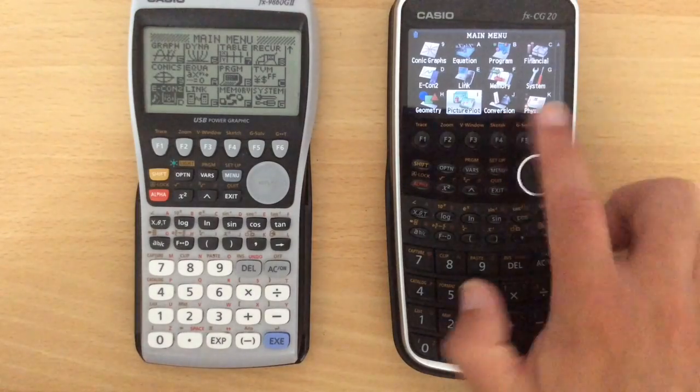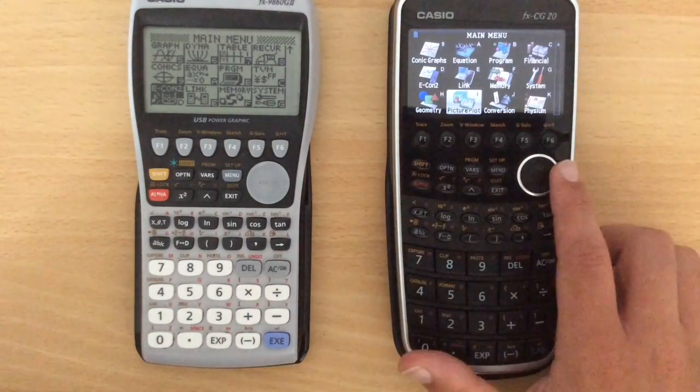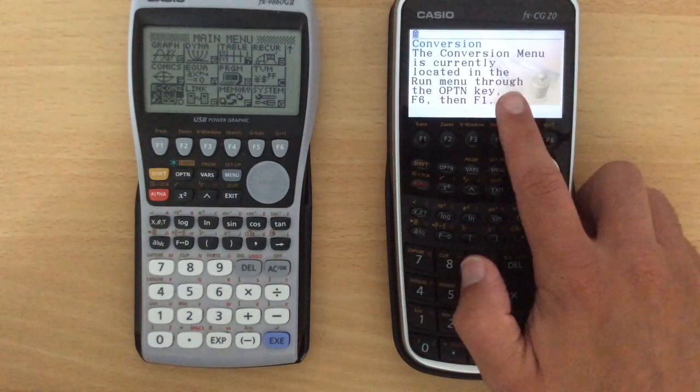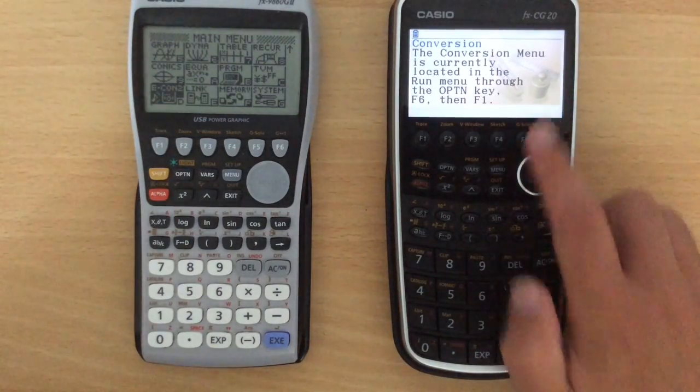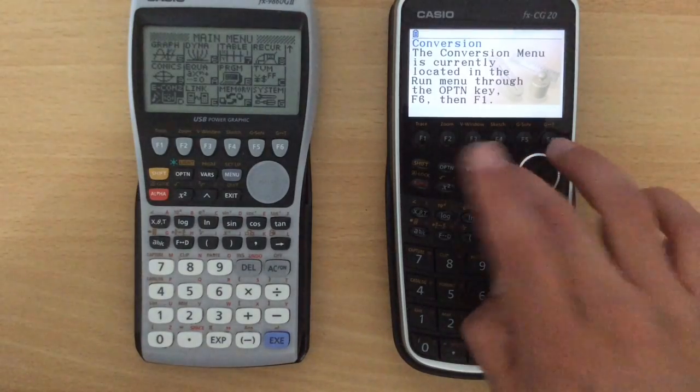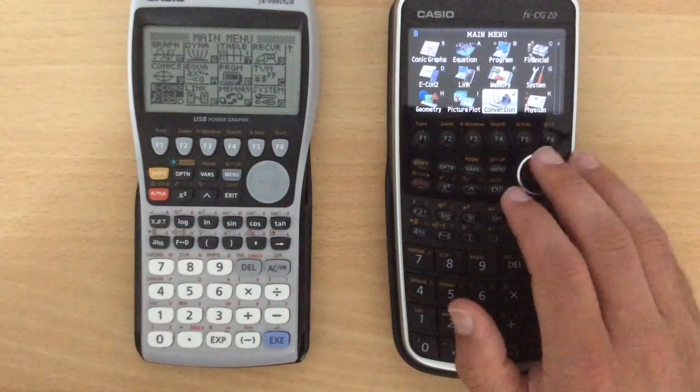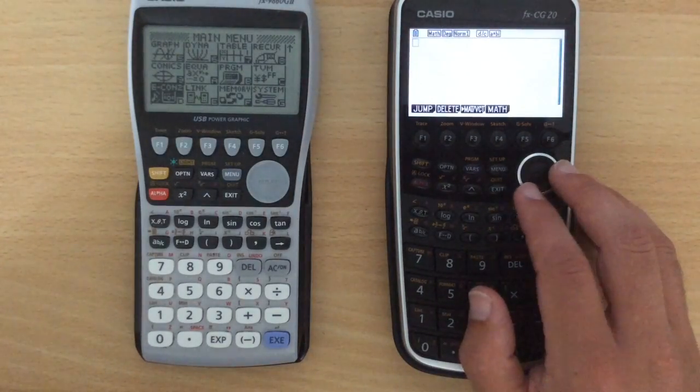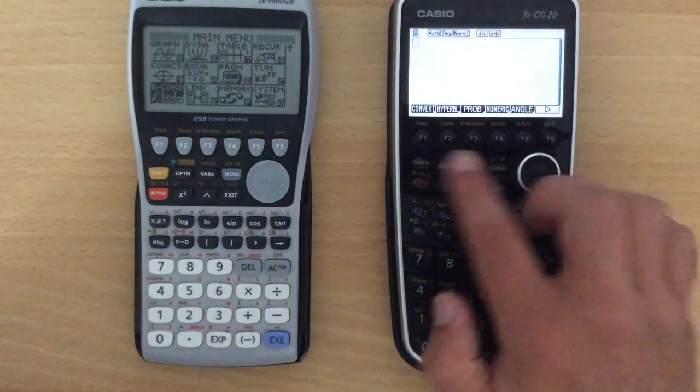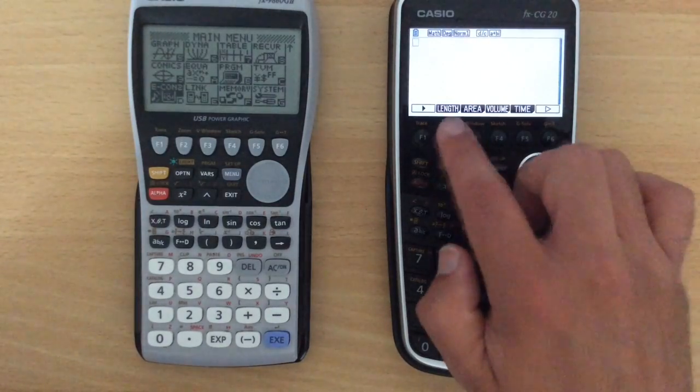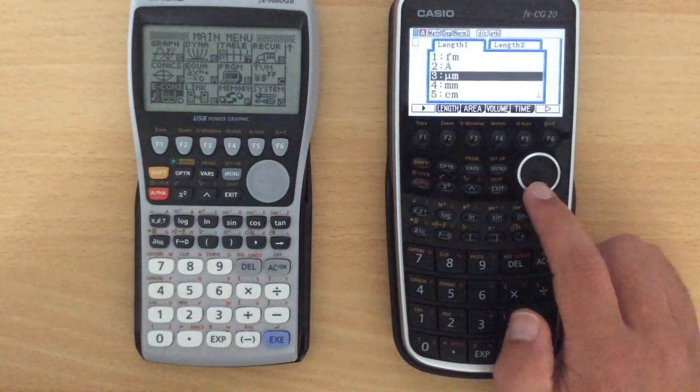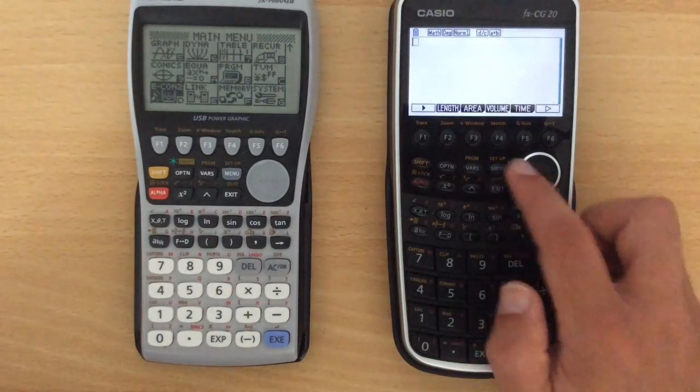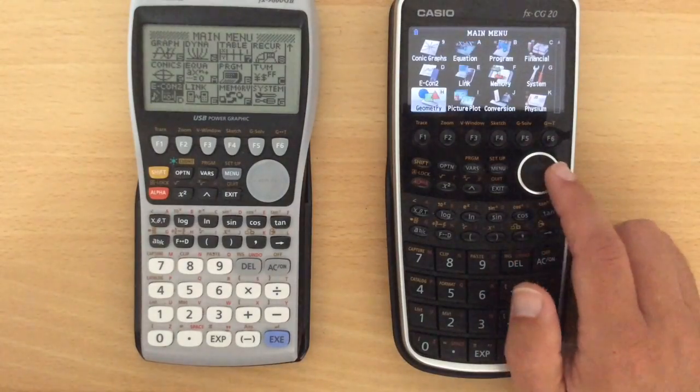One thing it does do, which is quite nice that the 9860 doesn't, is conversion. Although, rather puzzlingly, when you go into that mode, it says, well, if you want to do it, you need to go into the main calculating mode. Okay, why have it as a separate thing? I'm not really sure. But if we go back up to our main mode and we press options, F6, F1, we've got a load of different conversions so we can convert between different measurements and so on. Not a game changer, but it's quite nice that it does it.